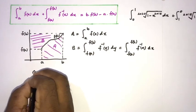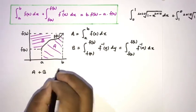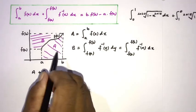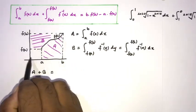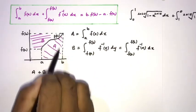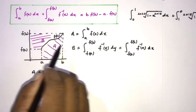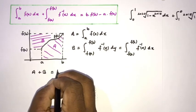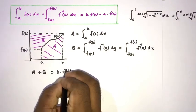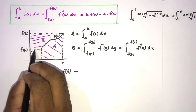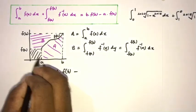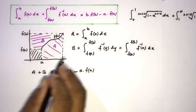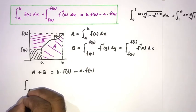Now I am going to take the sum of these two areas, A plus B. We can write A plus B is equal to the area of this big rectangle. The area of this big rectangle is b times f(b), minus this corner area, which is a times f(a).